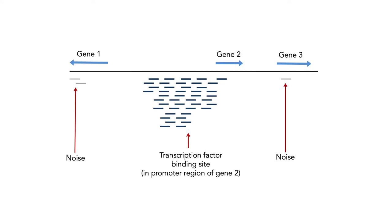The result looks something like this schematic: three genes along a genome sequence, with a series of reads from the ChIP-seq analysis. There's a large number of reads binding just upstream of gene number two, suggesting that whatever protein you were looking at is perhaps a transcription factor that binds to the promoter region of gene two. It's important to note you can never get rid of all other DNA — there's always a little that creeps through as noise.